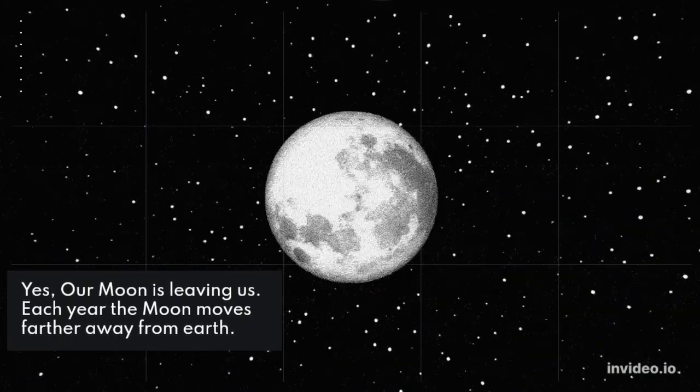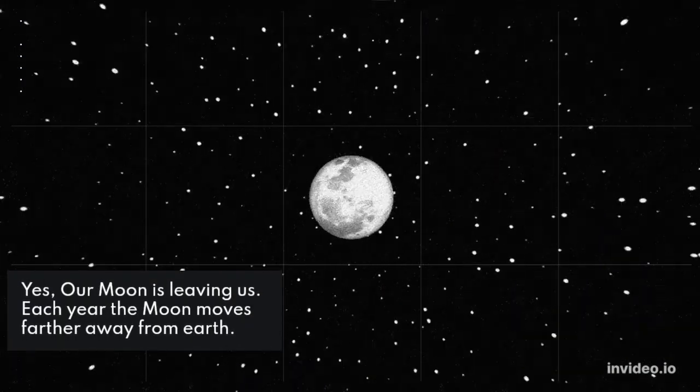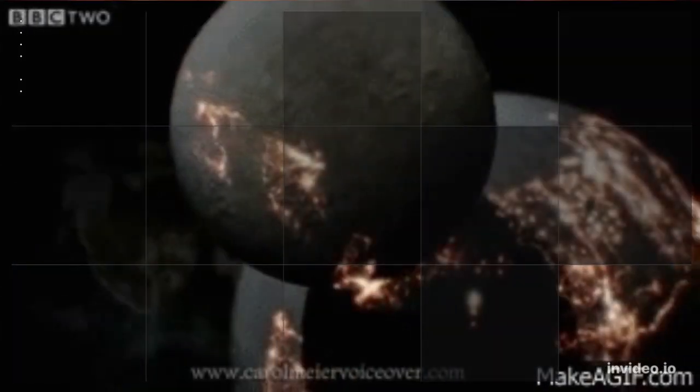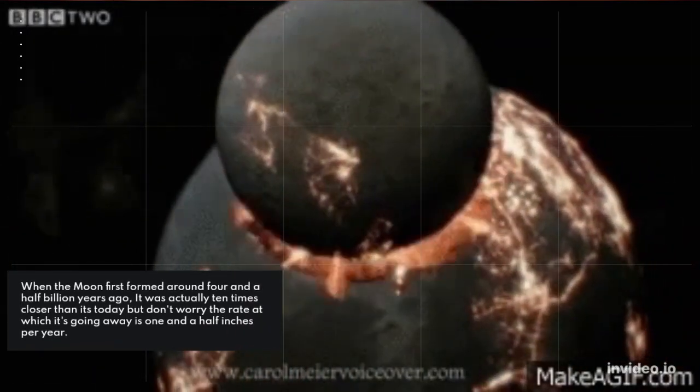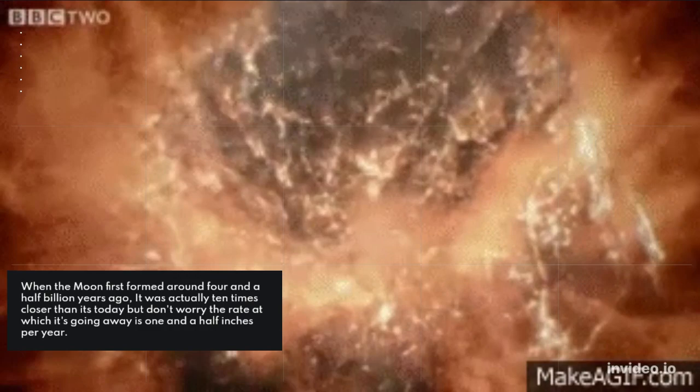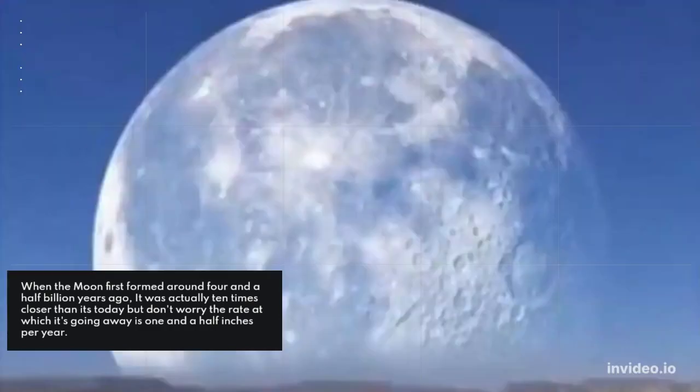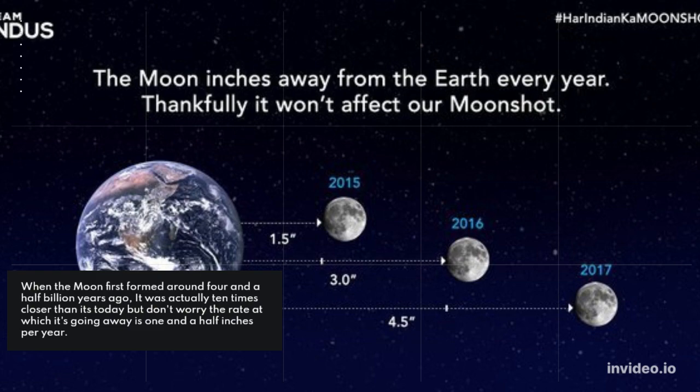Yes, our Moon is leaving us. Each year, the Moon moves farther away from Earth. When the Moon first formed around four and a half billion years ago, it was actually 10 times closer than it is today. But don't worry—the rate at which it's going away is one and a half inches per year.